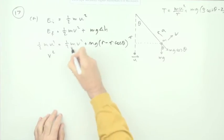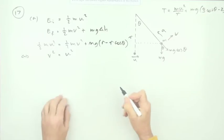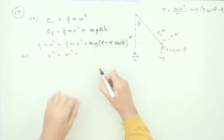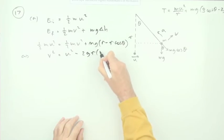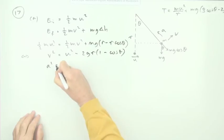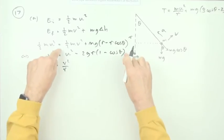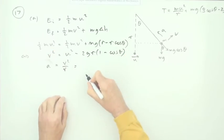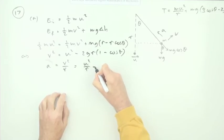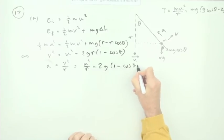I'll just rearrange that, noticing that all the m's will cancel out, and doubling it at the same time, and I'll have v squared equals u squared minus 2gr times 1 minus cos theta. From this you can find the centripetal acceleration, which is equal to v squared upon r. That will be equal to u squared upon r minus 2g times 1 minus cos theta.